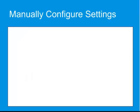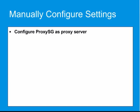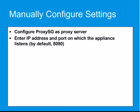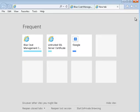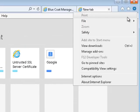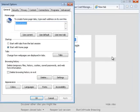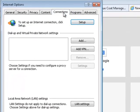To set up an explicit proxy using the browser, configure the ProxySG appliance as the proxy server in each client browser. In a typical setup, you will enter the appliance's IP address and port on which the appliance listens for traffic — by default 8080. As an example, in Microsoft Internet Explorer, open Internet Explorer and select Tools, Internet Options, Connections, LAN Settings.